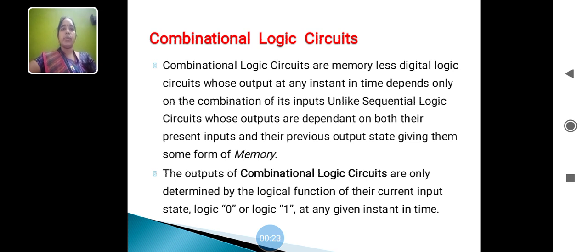Combinational Logical Circuits are memoryless digital logic circuits whose output at any instant in time depends only on the combinations of its inputs. Unlike sequential logic circuits whose outputs are dependent on both their present inputs and their previous output state, giving them some form of memory.